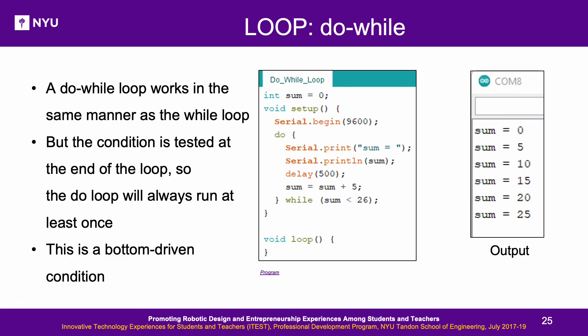Do-While Loop: All statements run in the loop body before the test expression is evaluated. If the sum is initialized to 26 as shown in the sketch, the loop will run once and print 26, then not run again because the test expression evaluates to false.